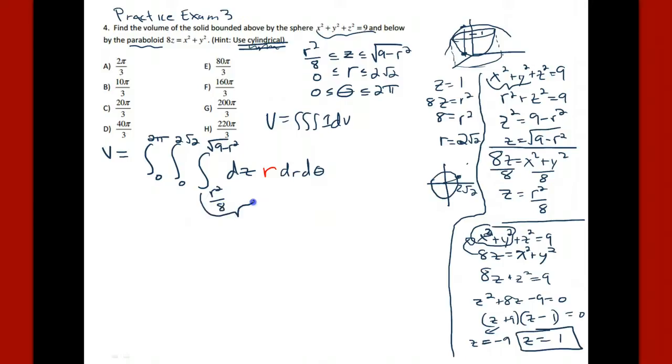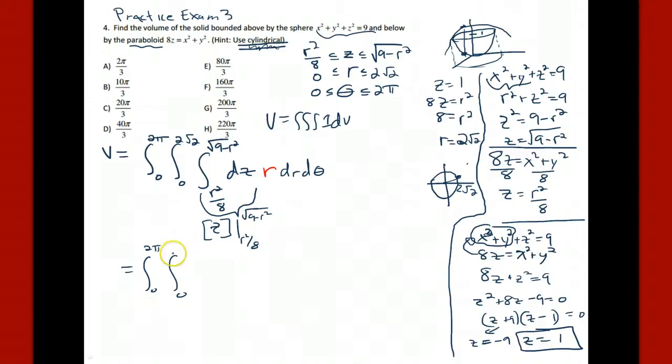So we can do this integral here, which is going to be the subtraction of these, right? We take z, the anti-derivative. There's nothing but a 1 there. And we subtract. And that's going to be our integrand. So we go from 0 to 2 pi. Then we go from 0 to 2 root 2. Okay, and we have the root of 9 minus r squared minus the r squared over 8. And that's evaluated. Oh, don't forget about the r.